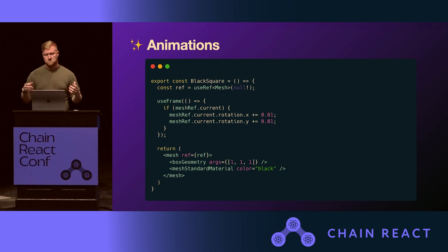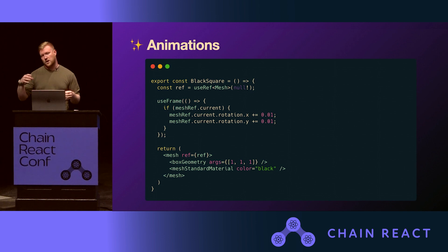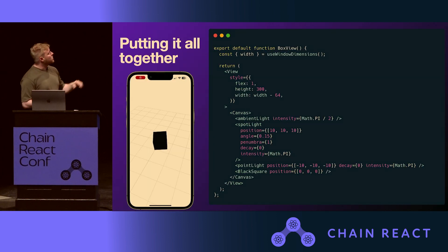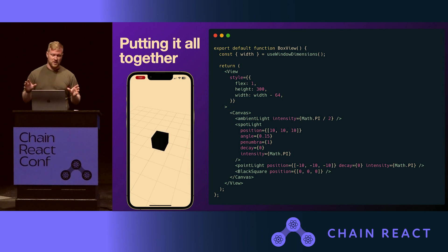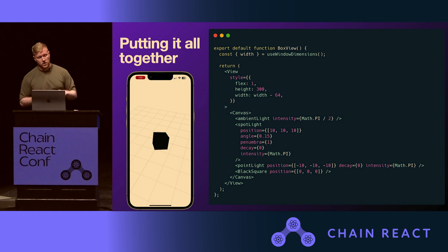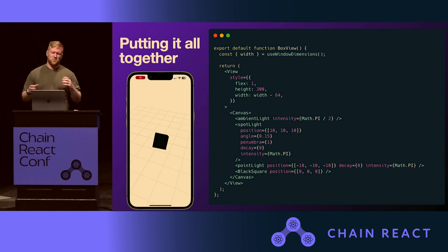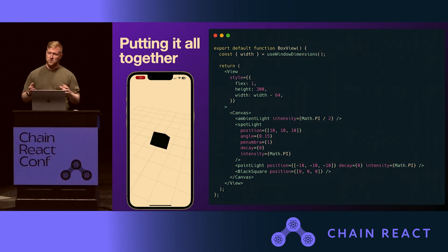The useFrame hook attaches the mesh to the rendering loop so we can tell it to do something on every frame that's rendered. In this case we're doing a small rotation on the Y and X axes to get the cube rotating nicely. When we put all that together, we end up with something like this — it has some additional properties like ambient light to make it nicer, but it's pretty easy to get started.